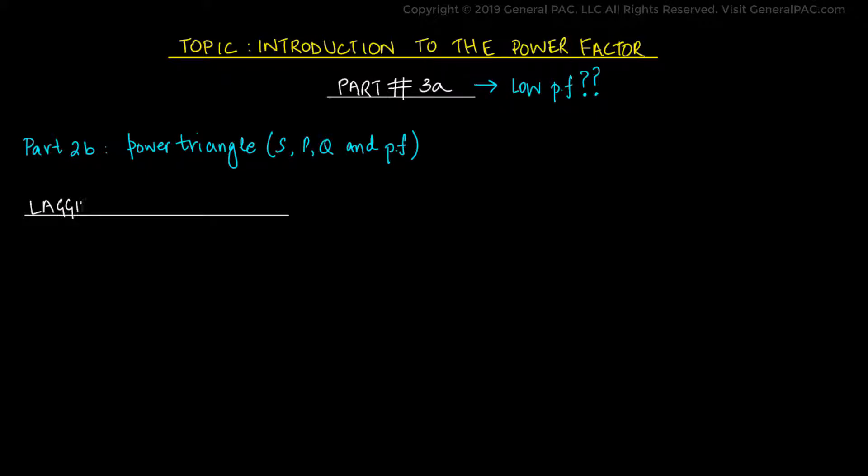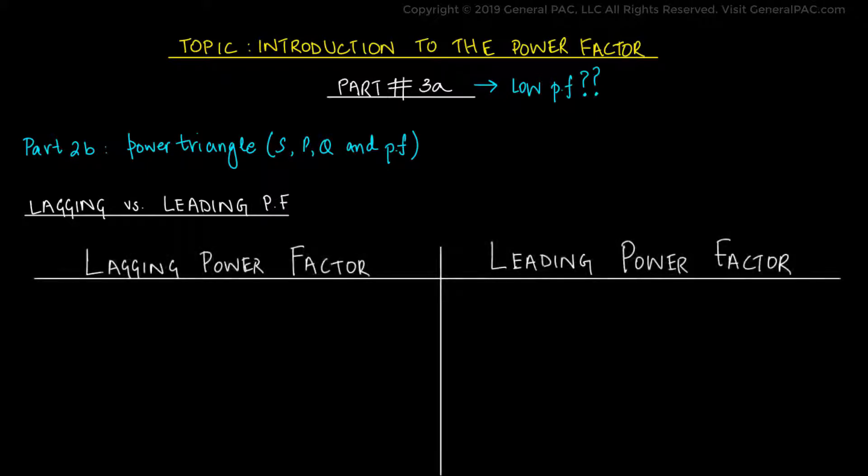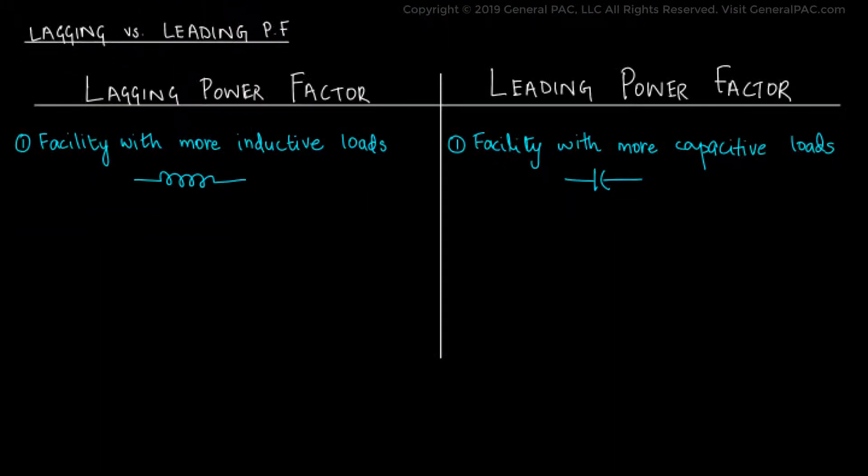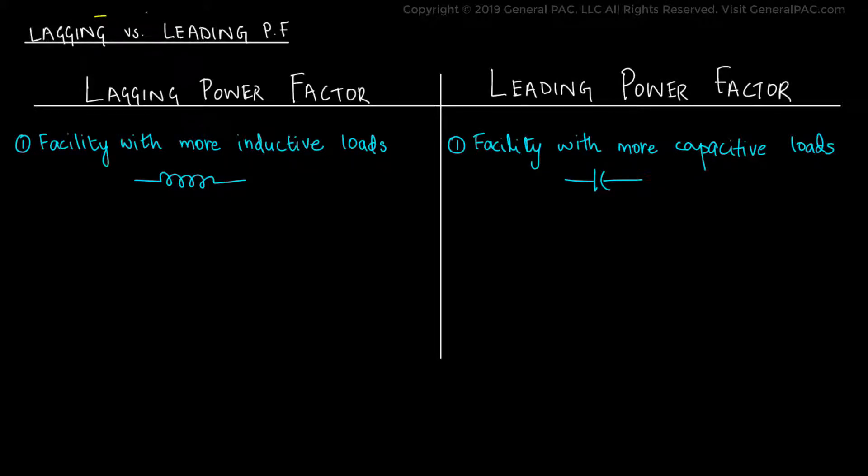Now before we delve into the root cause, let's first establish the difference between a leading and lagging power factor. Simply put, a facility with more inductive loads would be considered to be a lagging power factor, whereas a facility with more capacitive loads would be considered as leading power factor. The word lagging and leading defines the direction of the phase angle between the apparent power and real power.